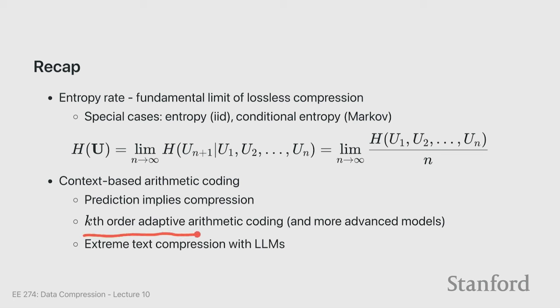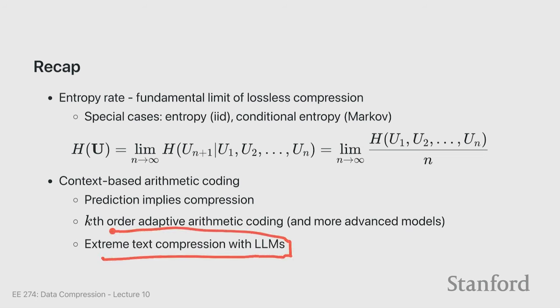We looked at specific models for prediction: kth order adaptive arithmetic coding, which you had a quiz question on, and more advanced models including large language models, where you can push compression to its limits. All of this was based on very carefully modeling the data or learning the probability distribution. Today we will see a very different technique where you don't do that and still achieve excellent results.